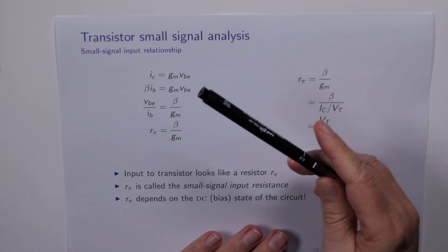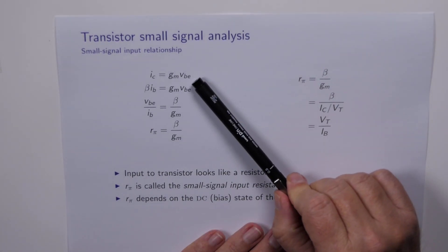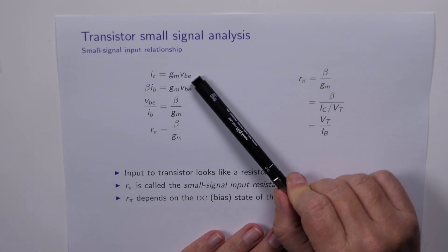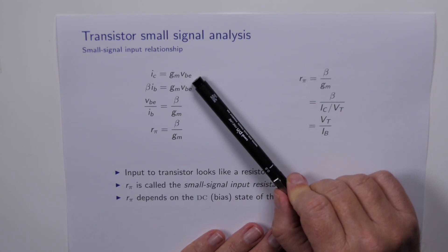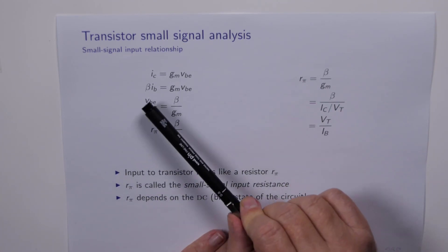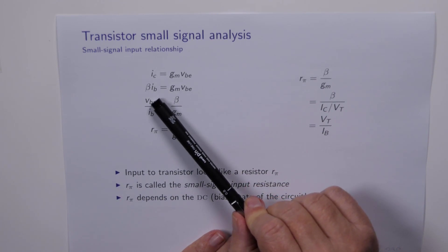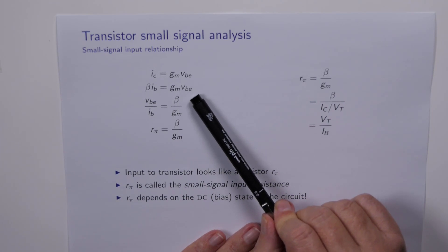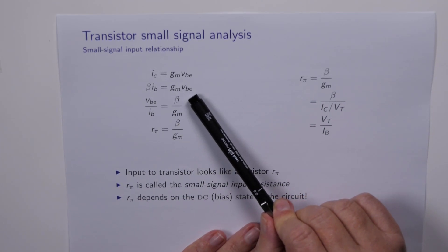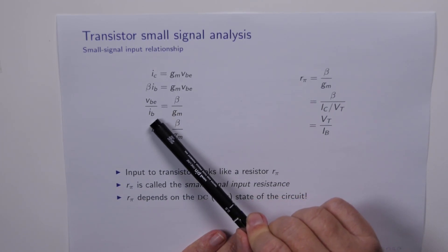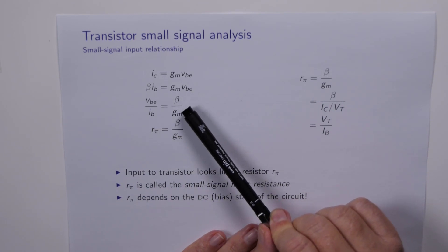So we can now actually delve into the input side of the transistor from the same equation, because the collector current is equal to beta times the base current. So beta IB is equal to GM VBE. Well we can rearrange this equation to get VBE over IB, which is beta over GM.